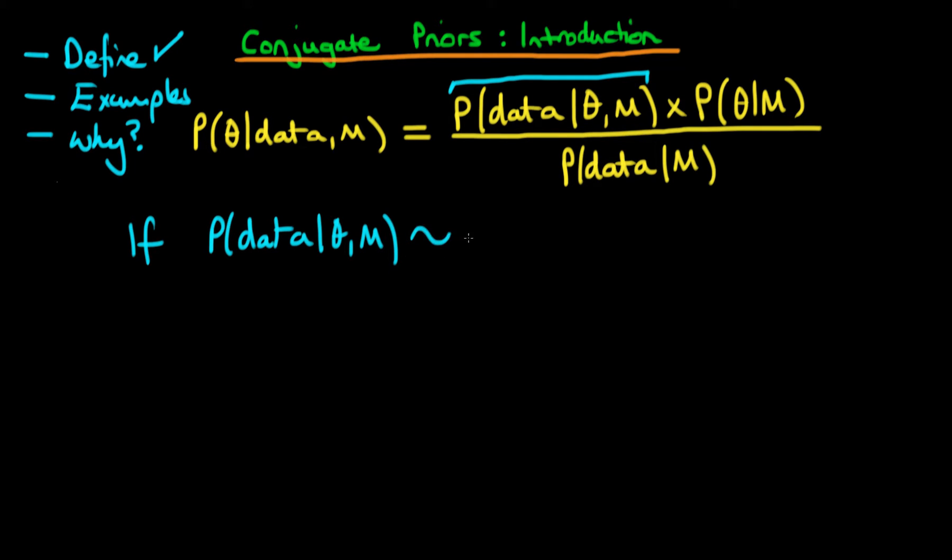If we were to assume that our likelihood function here was normal, so we're talking about a normal distribution there, then the idea is that what we can do is we can choose our prior. So remember that this here is the prior. And if we choose the prior, the probability of theta given our particular model choice, to also be normal, not necessarily having the same mean or anything like that, but just having a normal distribution form,